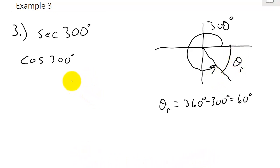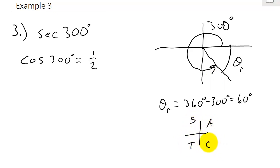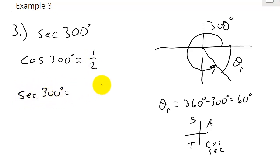Now let's find the cosine of 300. What's the cosine of 60? The cosine of 60 is 1/2. We're in the fourth quadrant — what's cosine in the fourth quadrant? Cosine is positive. Remember, all students take calculus — cosine and secant are both positive in the fourth quadrant. So cosine of 300 is positive 1/2, and that means secant of 300 degrees is the reciprocal of the cosine, which is 2.